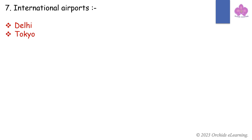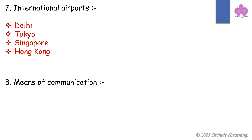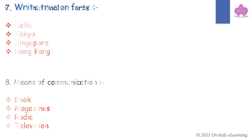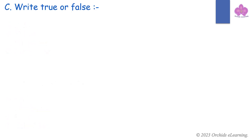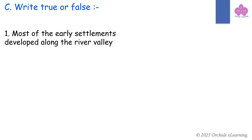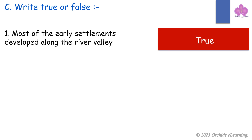International airports: Delhi, Tokyo, Singapore, Hong Kong. Means of communication: books, magazines, radio, television. Write true or false. Most of the early settlements developed along the river valley — True.